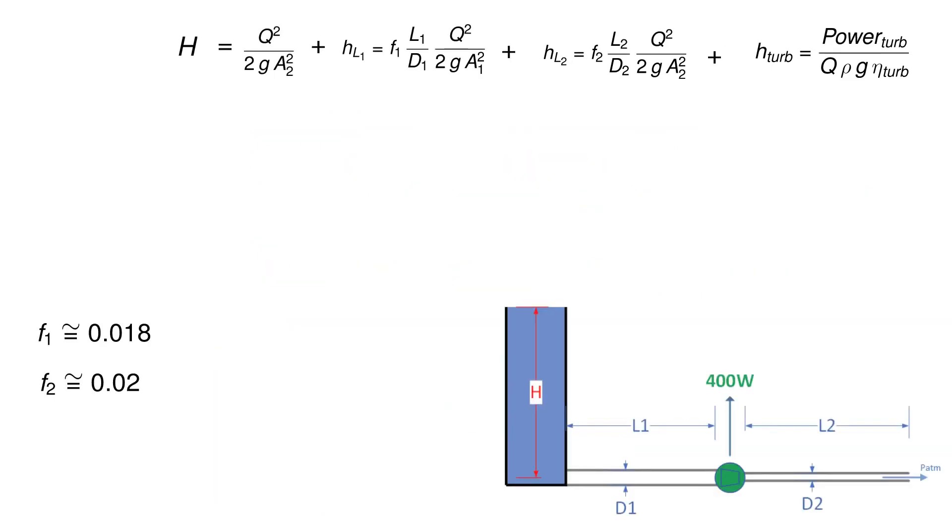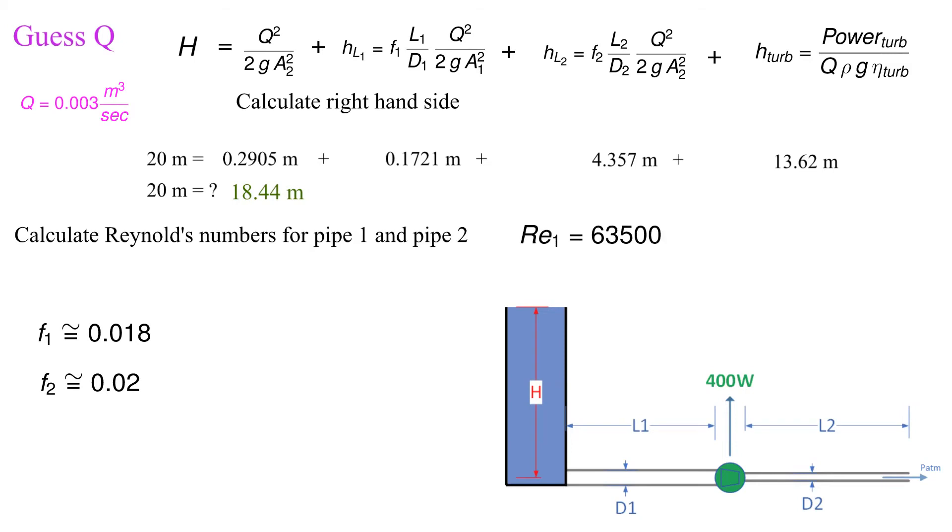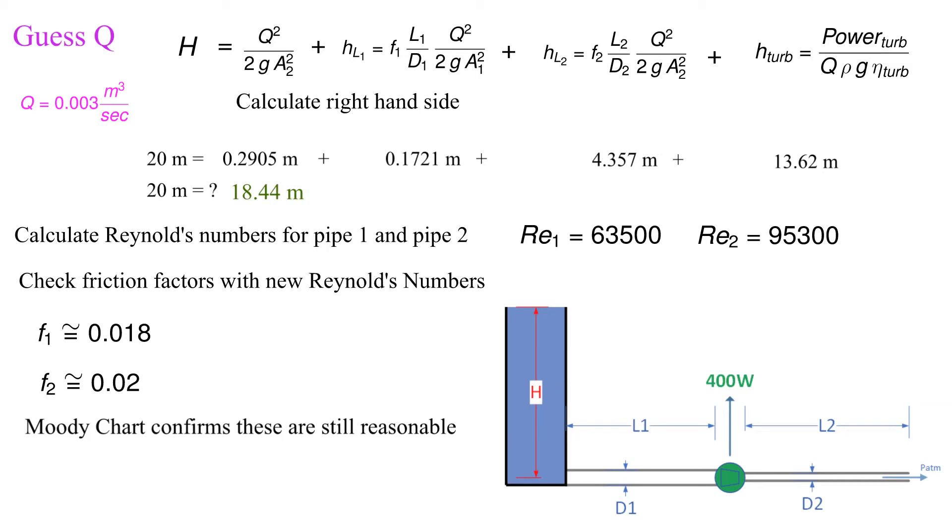Let's do our first iteration. Let's guess an initial flow rate of 0.003 cubic meters per second. The sum of the four terms on the right hand side of the equation is 18.4 meters. That's not close enough. Before we go to the next iteration we calculate the Reynolds numbers and check the friction factors. In reality when I picked 0.003 cubic meters per second I already did this but these are the normal steps in our iteration process.